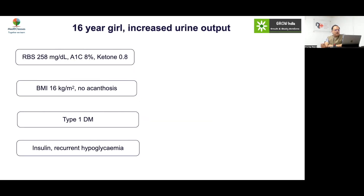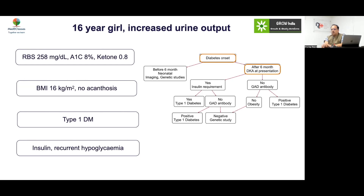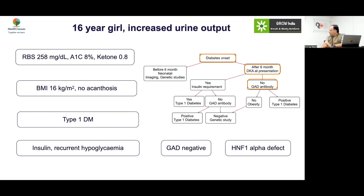Case 1: A 16-year-old girl with increased urine output, high sugars, HbA1c 8%, lean, no acanthosis, ketones negative, labelled type 1, now developing recurrent hypoglycemia. Should you evaluate further? Yes — consider strong family history. No acanthosis and hypoglycemia means she is insulin-sensitive, so this is more a problem of insulin production. Either progressive beta-cell failure from autoimmunity or a genetic cause. GAD antibody was negative, so you have to think of a genetic diagnosis — which turned out to be HNF1-alpha.